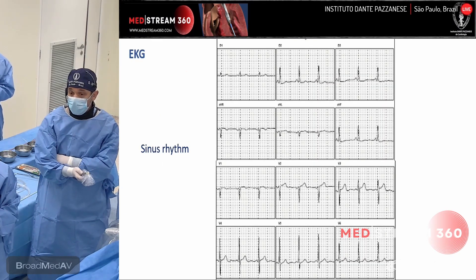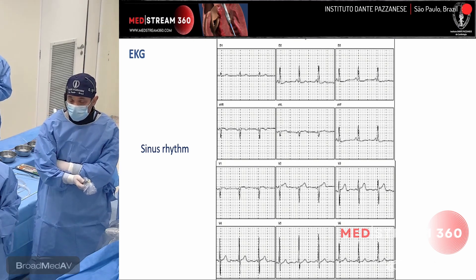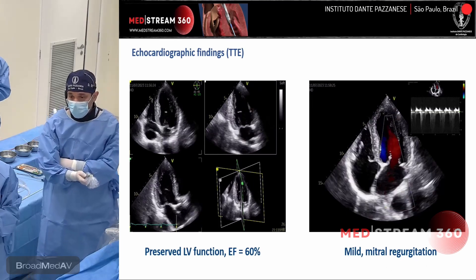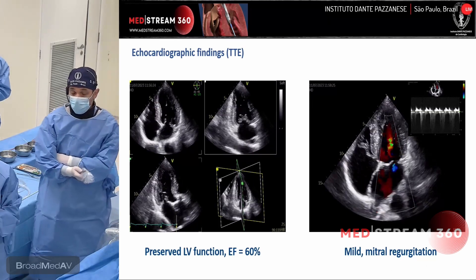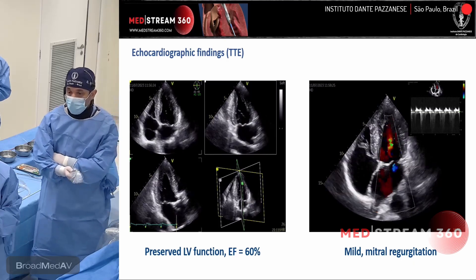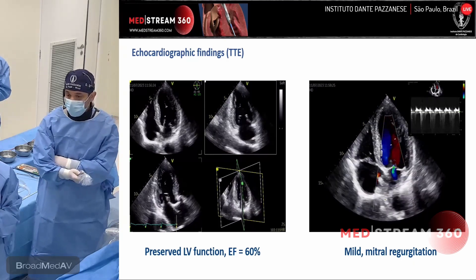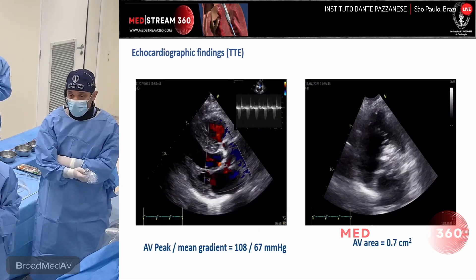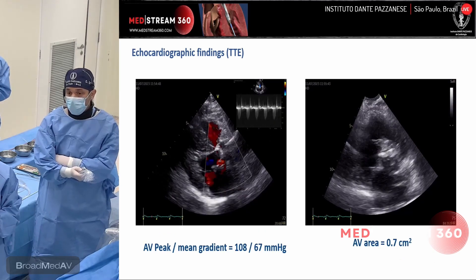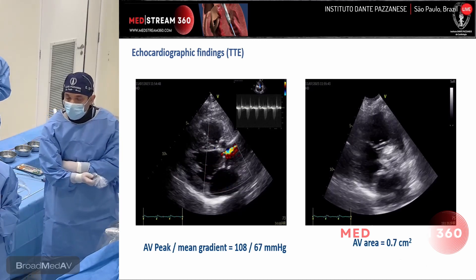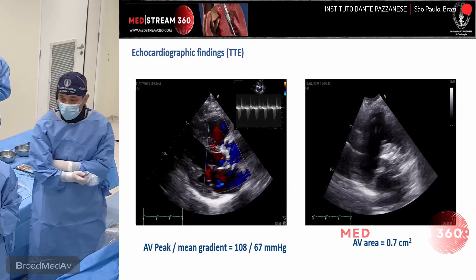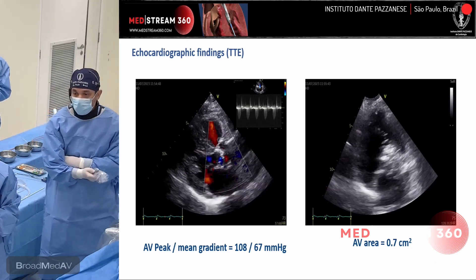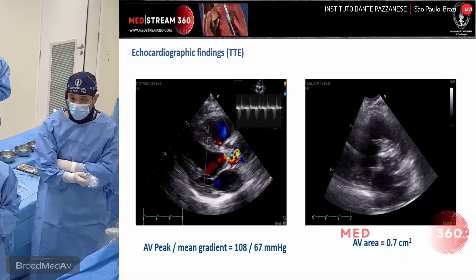He is on sinus rhythm and these are the echo findings. You can appreciate that the LV function is well preserved. Ejection fraction is 60%. He has a mild mitral regurgitation and severe aortic stenosis. The mean gradient is 67 and the aortic valve area was estimated as 0.7 square centimeters.